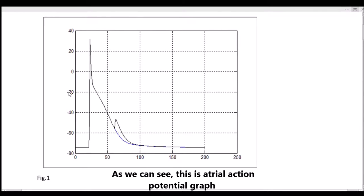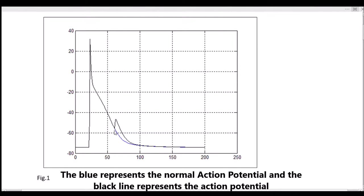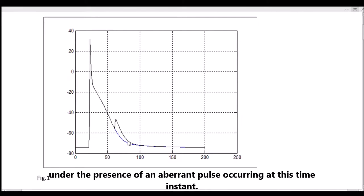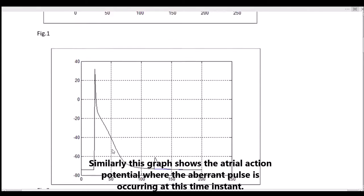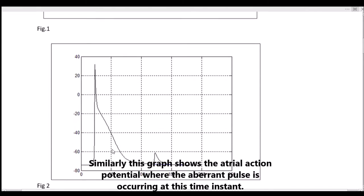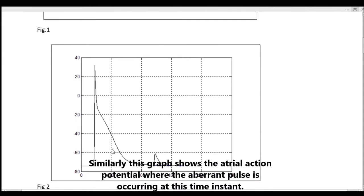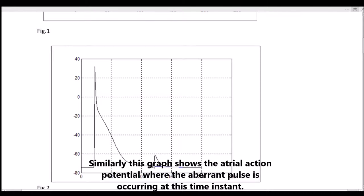As we see here, this is the atrial action potential graph. The blue line represents the normal action potential and the black line represents the action potential under the influence of an aberrant pulse occurring at this time instant. Similarly, this graph also shows the atrial action potential where the aberrant pulse is occurring at a different time instant.